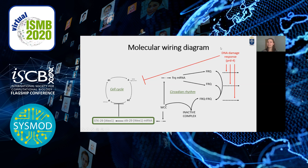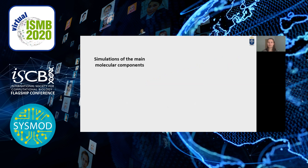Furthermore, the DNA damage response activates the PRD4 protein, which stops the cell cycle directly and, by activating the degradation of FRQ proteins, it also affects the cell cycle indirectly through the circadian rhythm.